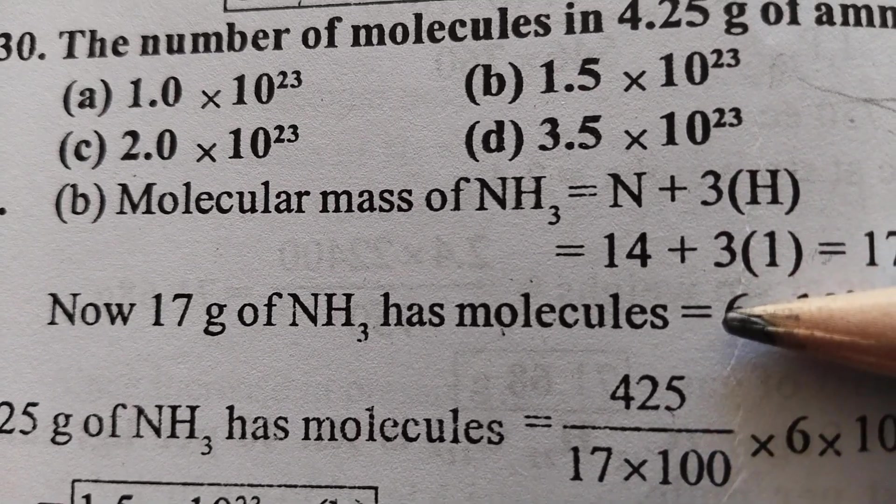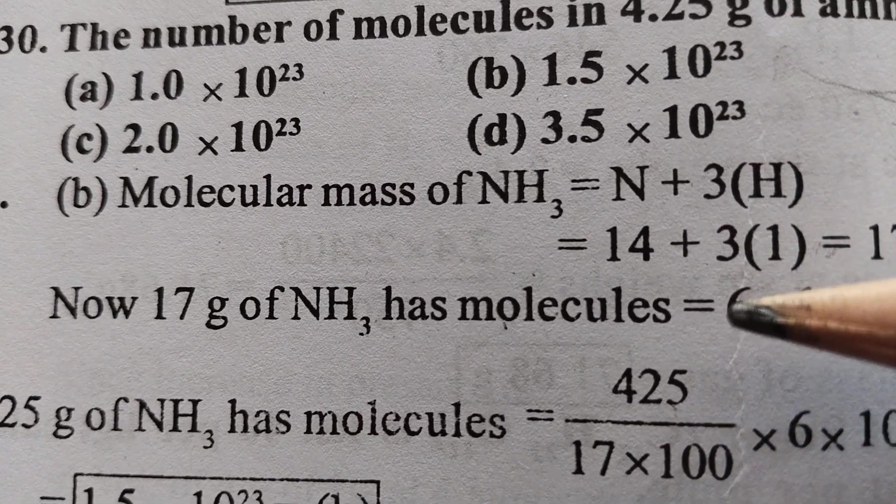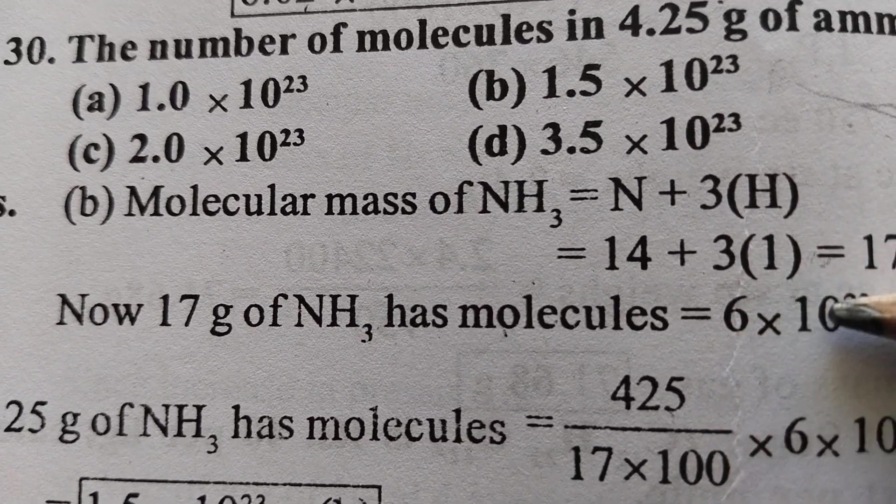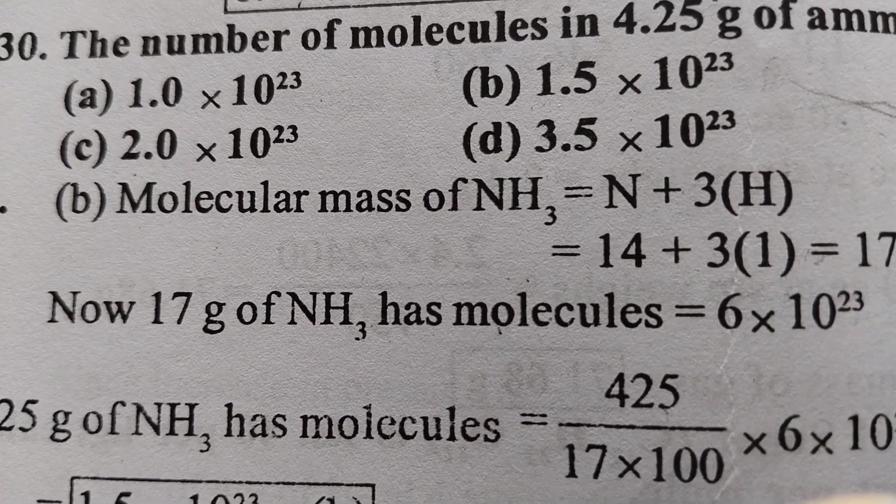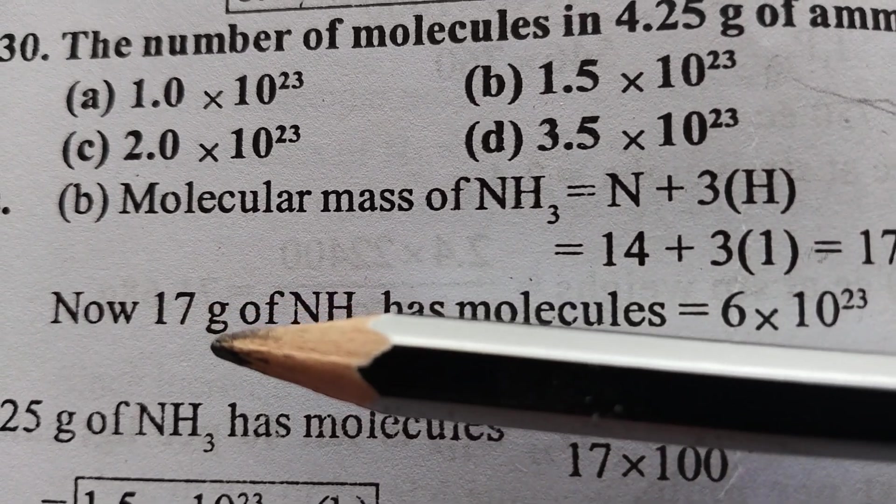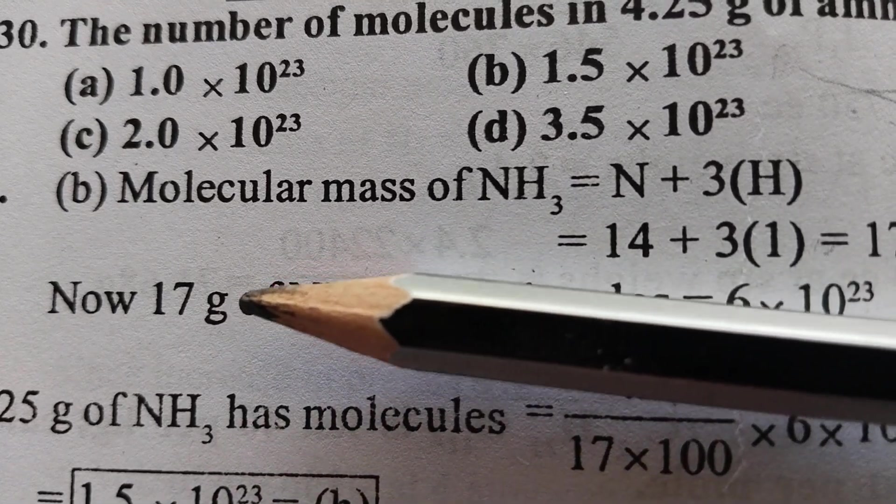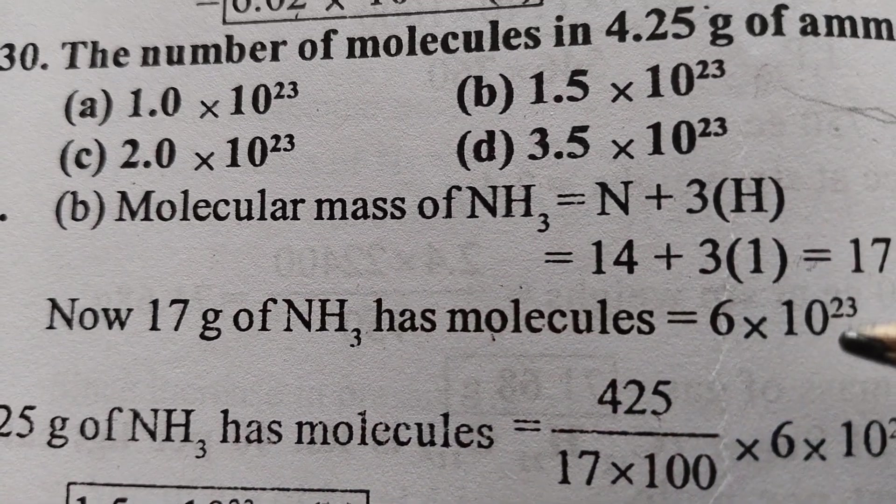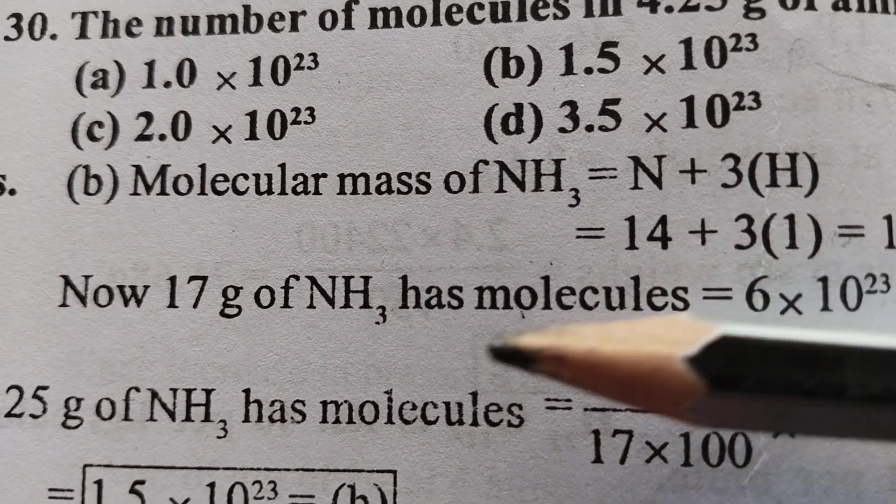Or you can say 6.023 × 10²³. You can ignore the point, so 6 × 10²³. That is the standard: if you know the molecular mass of ammonia, that is 17 grams, the number of molecules are constant, that is 6 × 10²³.